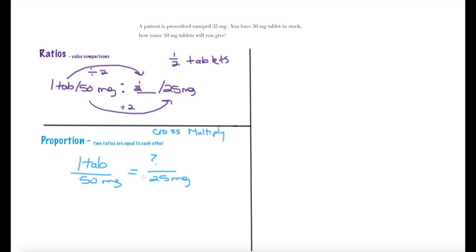We want to get rid of the denominators, so I'm going to take 25 milligrams, multiply that by 1 tablet, and that will equal my unknown times 50 milligrams. Now to get rid of that 50 milligrams on the right side and isolate that question mark, I need to divide both sides by 50. So on the left-hand side of the equation, you can see 50 milligrams is crossed out, leaving just the question mark. On the right-hand side, I'm going to cross off milligrams and solve. So 25 tablets divided by 50 is equal to my mystery dose: 0.5 tablets, which is the same as the ratios.